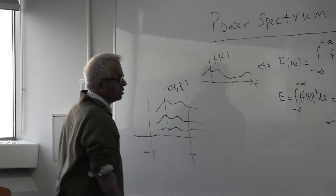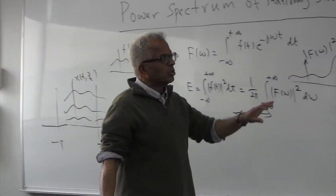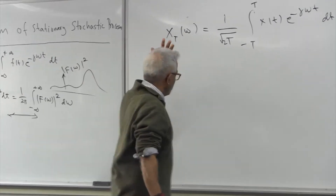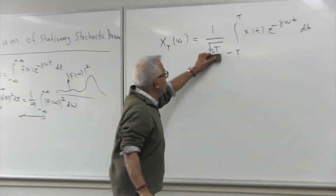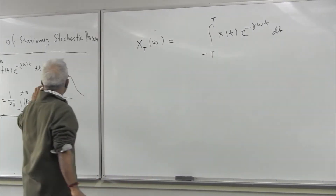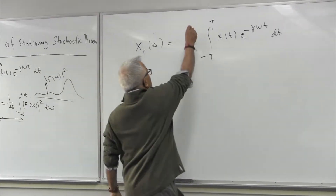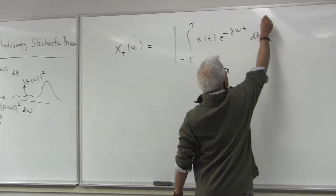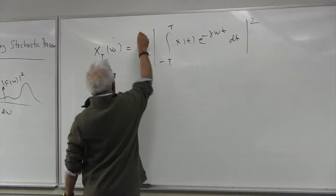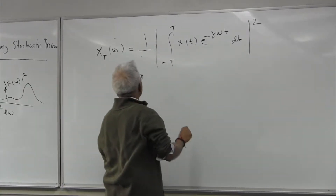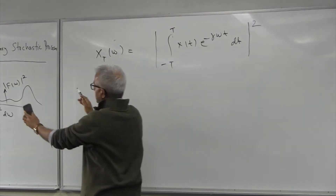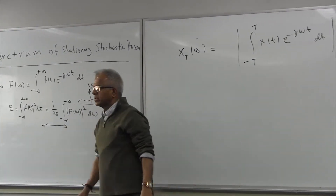I'm going to do it over the segment minus T to T of the realization x(t). I'm also scaling this. What I'm interested in is the absolute value squared. So I take the absolute value squared. Unlike the deterministic case, I'm also going to divide by the duration. From here you can see this is the concept of energy being developed.